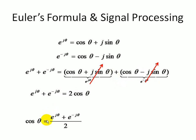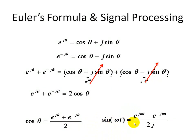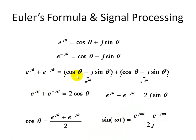Solving for cosine theta, we have cosine theta equals E to the J theta plus E to the minus J theta divided by 2. Similarly, for sine, instead of adding the two expressions, we subtract E to the minus J theta from E to the J theta. The cosine terms cancel, leaving 2J sine of theta. Dividing by 2J, sine omega t equals E to the J omega t minus E to the minus J omega t, all divided by 2J.